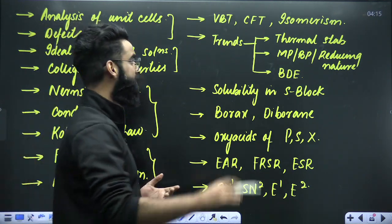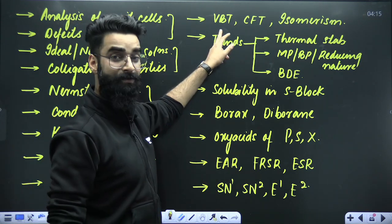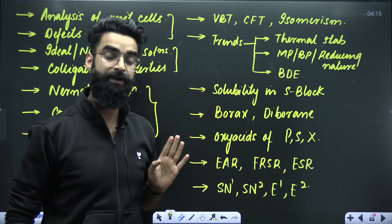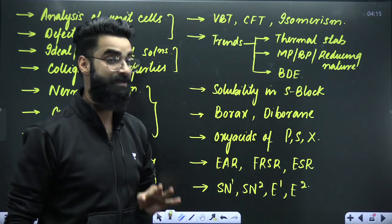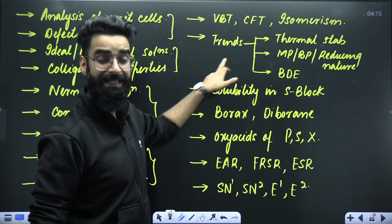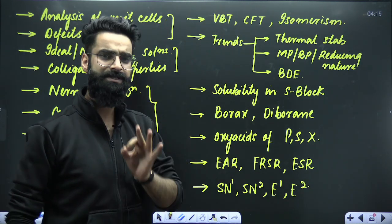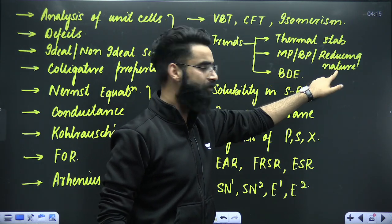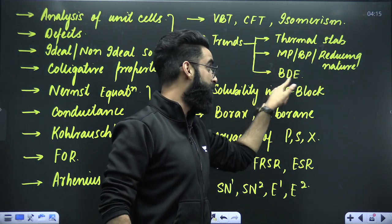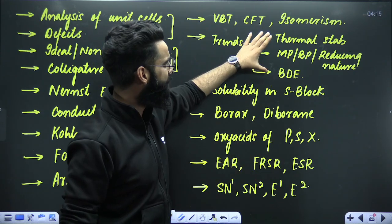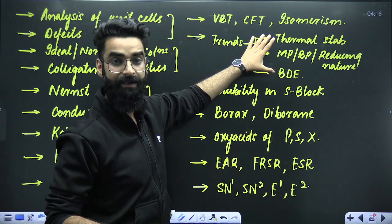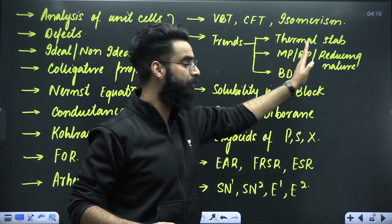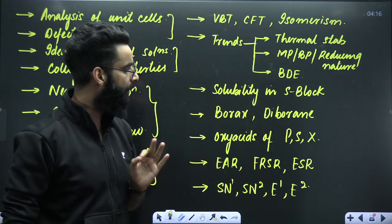For coordination chemistry, there are three topics to prioritize: Valence Bond Theory (VBT), Crystal Field Theory, and isomerism. Talking about trends in inorganic chemistry — do not skip topics related to thermal stability, melting point, boiling point, reducing nature, and bond dissociation energy. You must remember all these trends as they are frequently examined.